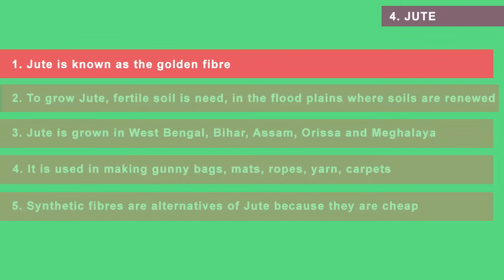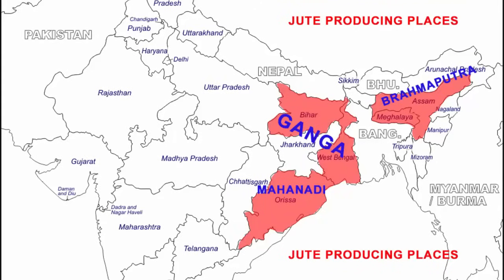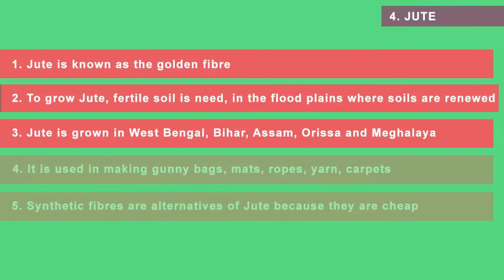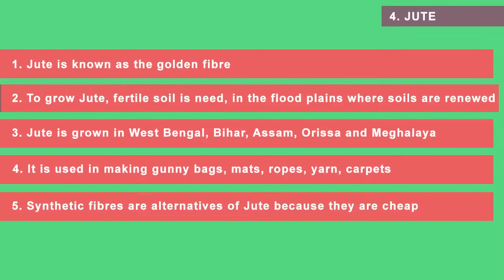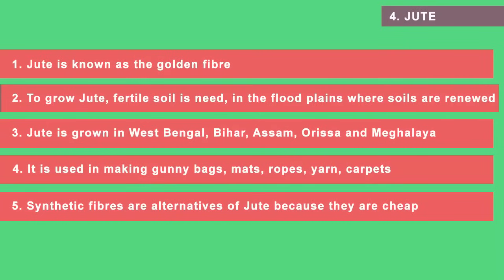The last type of non-food crop is jute, referred to as the golden fiber due to its brownish and golden color. You need fertile soil that gets renewed every year through the continuous flow of rivers. States like West Bengal, Bihar, Assam, Orissa and Meghalaya have perennially flowing rivers that help renew the soil. Jute is used to make gunny bags, mats, ropes, yarn, carpets and other artifacts. However, because jute products are costly, jute is losing market to cheaper synthetic or artificial fibers that are chemically produced.